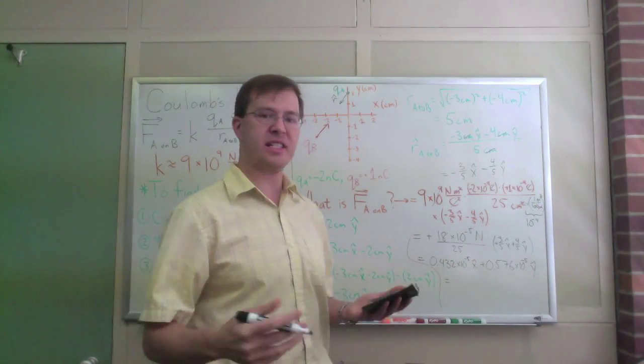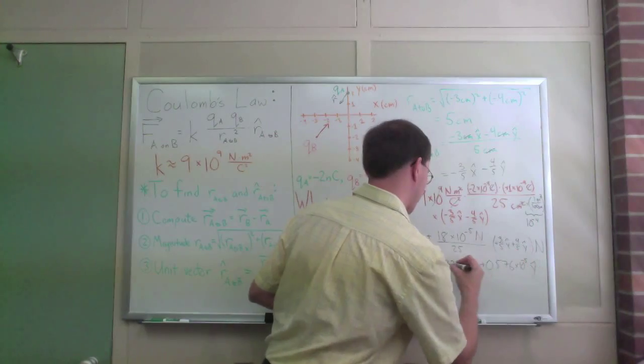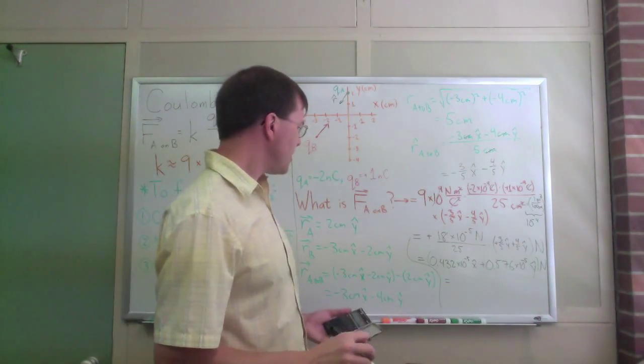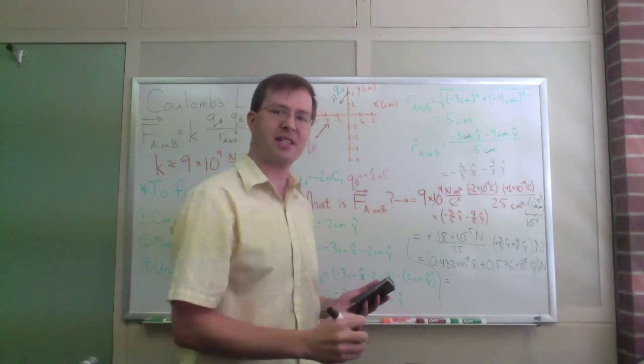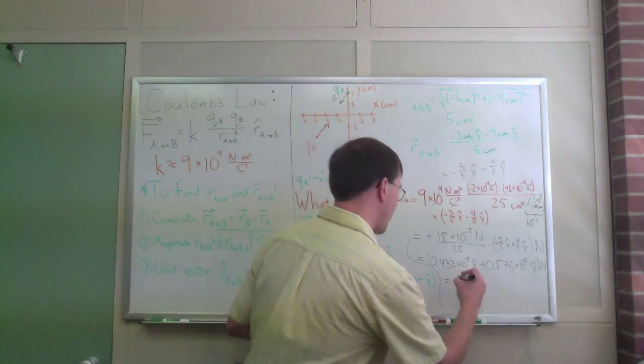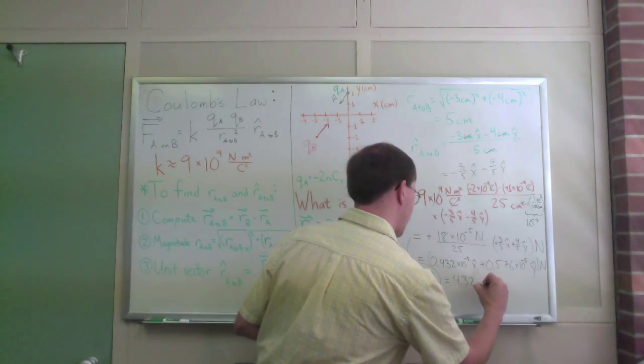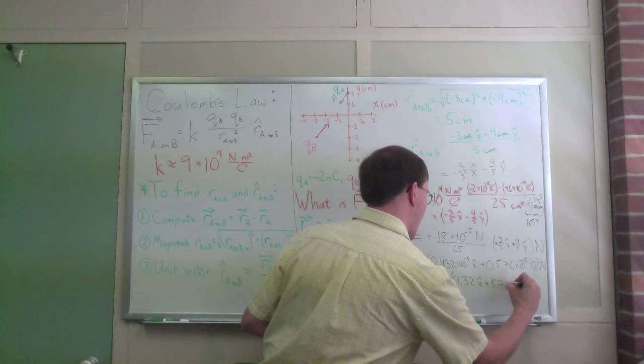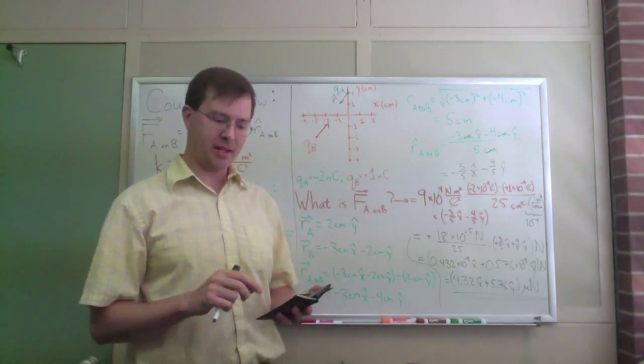if I want to write it as 10 to the minus sixth, oh, my goodness, I left out my newtons. Of course this is newtons. Don't forget your units, kids. So, got to be newtons. So this is going to be, if I move this decimal point over, that's going to be times 10 to the minus sixth in each one, and I know 10 to the minus sixth is the micro SI prefix, so I can write this as 4.32 x-hat plus 5.76 y-hat micronewtons. And that's my answer. I've calculated that out.